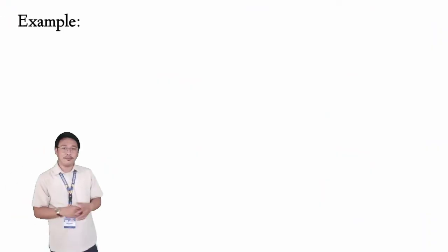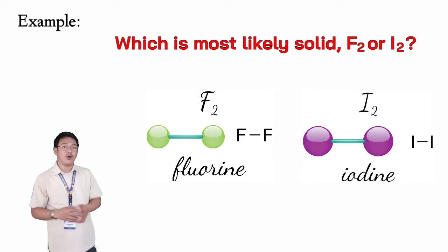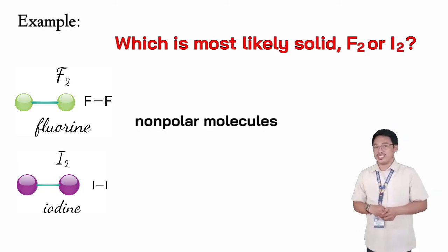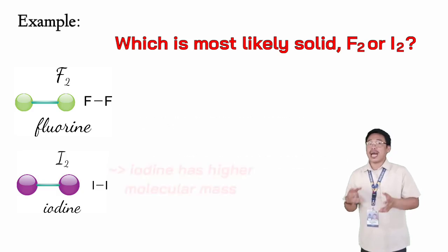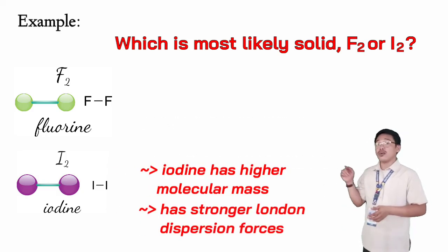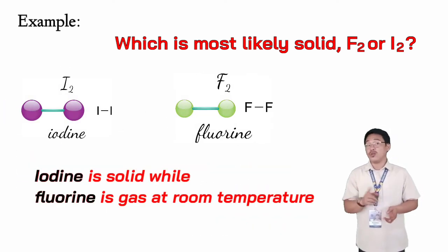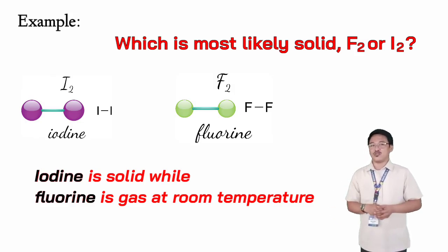Consider this example: which is most likely solid — fluorine or iodine? Both fluorine and iodine are non-polar molecules that exhibit London dispersion forces only. Because iodine has a higher molecular mass, it has stronger London dispersion forces and is most likely to be solid. And indeed, iodine is solid while fluorine is gas at room temperature. And that's all for today.